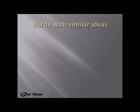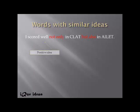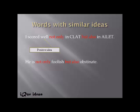Words that show similar ideas: 'I scored well not only in CLAD but also in ISLET.' Here we have a positive idea — 'I scored well' — and 'not only but also' joins two positive instances. Conversely: 'He is not only foolish but also obstinate' joins two negative ideas. So 'not only but also' joins two simultaneous positive or two simultaneous negative ideas together.